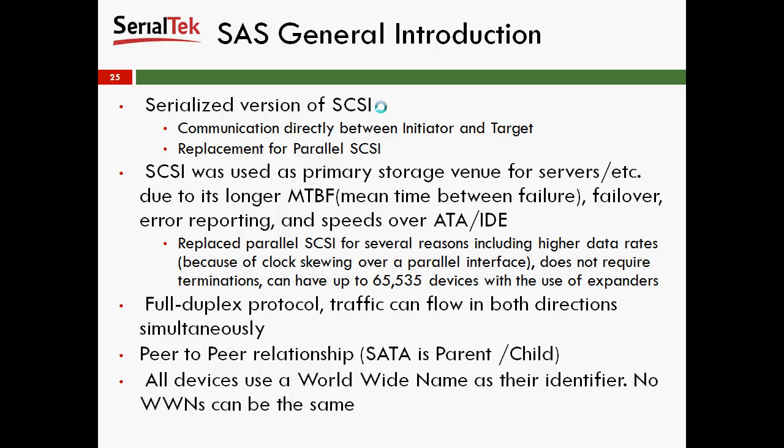Essentially, SCSI was an on-demand 24-7 device or bus, whereas Serial ATA, while cheaper, isn't something that you want to run for a long time in a row. SAS replaced parallel SCSI for several reasons, including higher data rates because of clock skewing over a parallel interface, and it does not require terminations. It can also have up to 65,535 devices with the use of expanders, making it a really large storage network. It's a full duplex protocol, meaning traffic can flow in both directions simultaneously, and it's a peer-to-peer relationship, whereas Serial ATA is parent-child.